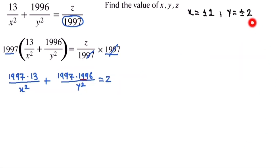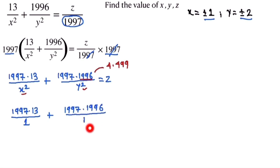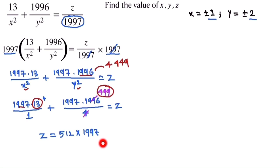Now we substitute the values of x and y into the equation. With x = 1, x² = 1, and y = 2, y² = 4: 1997 × 13 / 1 + 1997 × 1996 / 4 = z. The 1996 / 4 simplifies to 499, so z = 1997 × (13 + 499) = 1997 × 512.